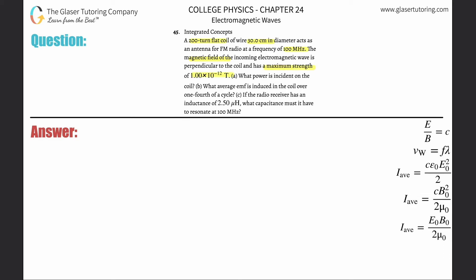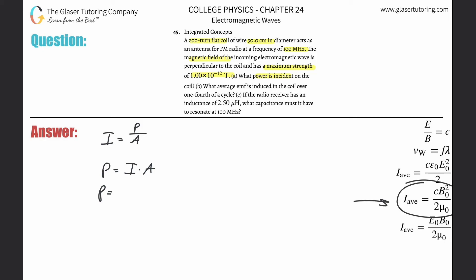What power? Intensity is equal to power over area. Solving for power: it's simply the intensity multiplied by the area. How do we find intensity if we know the maximum magnetic field? It's this formula on the right-hand side. We can substitute in for the intensity: speed of light multiplied by the maximum magnetic field squared divided by two times the permeability of free space.